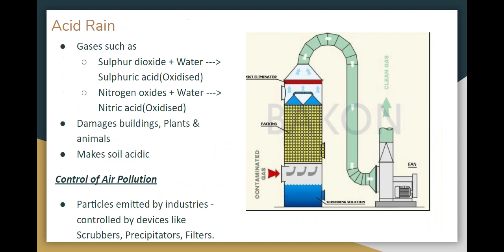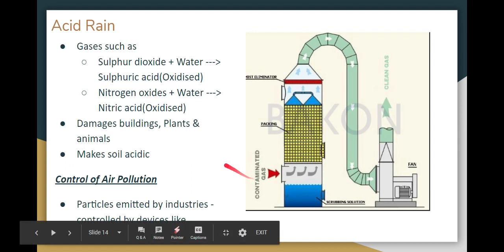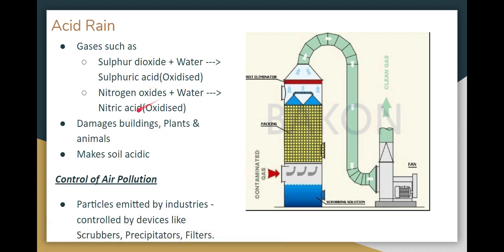The second secondary effect is acid rain. Sulfur dioxide and nitrogen oxide are oxidized to form sulfuric acid (H2SO4) and nitric acid (HNO3). This acid damages buildings, plants, and animals. It also makes the soil acidic — converting it to acid soil.